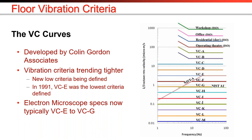There is a set of curves called the VC curves, or vibration criteria curves, developed by vibration consultant Colin Gordon Associates. The goal was to create a common language so that tool manufacturers creating specifications could communicate with lab directors, architects, vibration consultants, and solutions providers. These curves have evolved to the point that ultra-sensitive instruments typically use one of the VC curves as their vibration criteria.